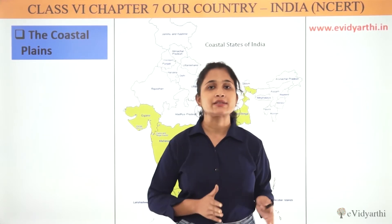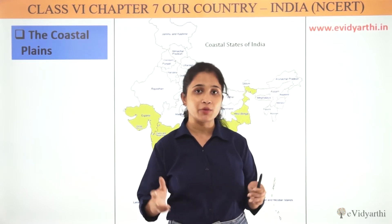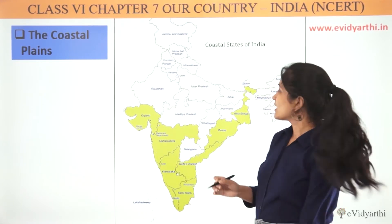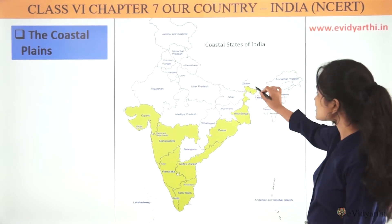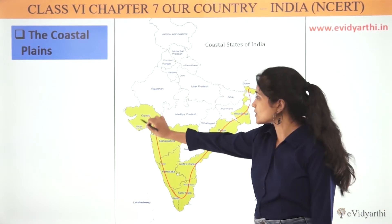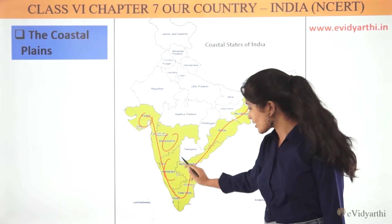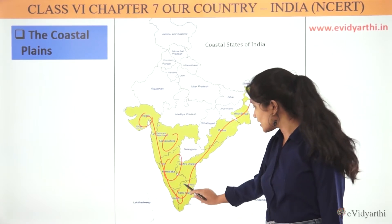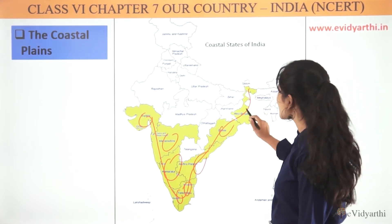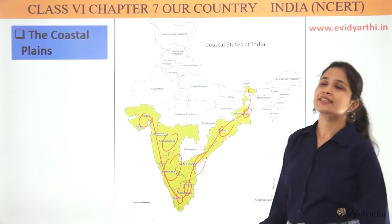So coastal plains are the areas that we can see from the ocean. You can see all states that are located on the coast: Gujarat, Maharashtra, Karnataka, Kerala, Tamil Nadu, Andhra Pradesh, Odisha, West Bengal — these are called coastal states.